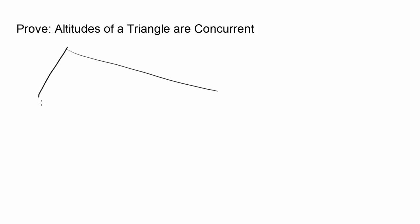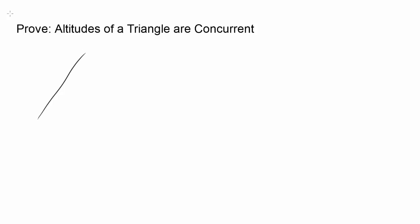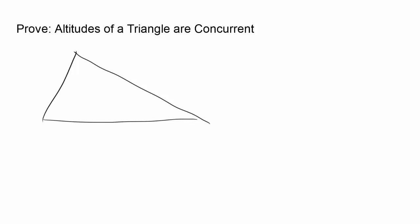Let's review some terminology, just in case you've forgotten it. Let me draw an acute triangle. Altitudes are the line segments starting at the vertex of a triangle and perpendicular to the opposite side.